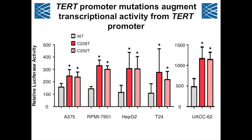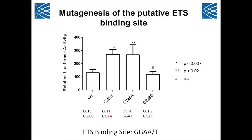To test whether these were functional mutations, we used well-established luciferase reporter systems. I cloned these mutations into a portion of the TERT core promoter and tested them in luciferase reporter assays across cell lines with known TERT promoter mutation status. We found that each mutation conferred about a two to four fold increase in transcriptional activity from the TERT promoter. When you mutagenize the site to a non-consensus ETS binding site, you don't increase transcription; but when you change it to C228A — also a consensus ETS binding site — you still maintain this increase in transcriptional activity.